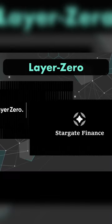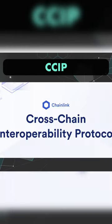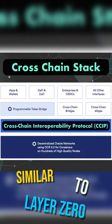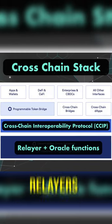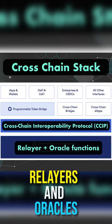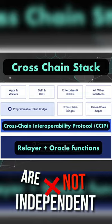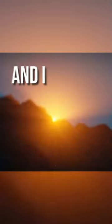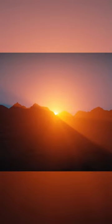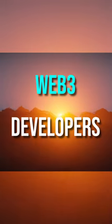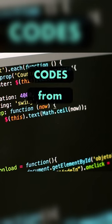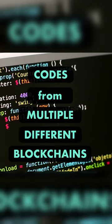For example, we've got the Layer Zero protocol used by Stack at Finance. CCIP from Chainlink is another one, similar to Layer Zero, but relayers and oracles are not independent. I think blockchain has a great future and I really can't wait to see web3 developers building their dApps with code from multiple different blockchains.